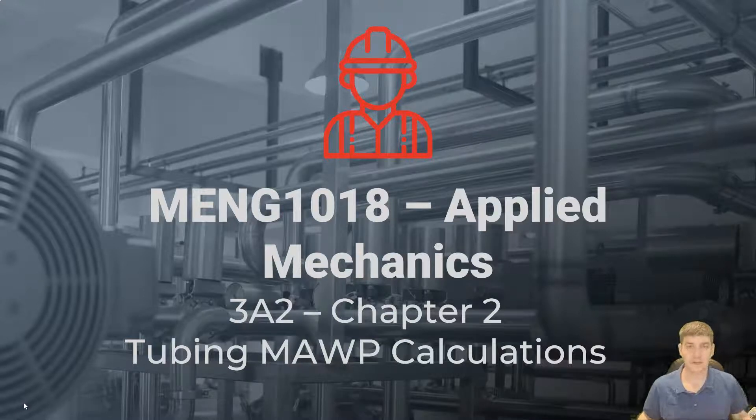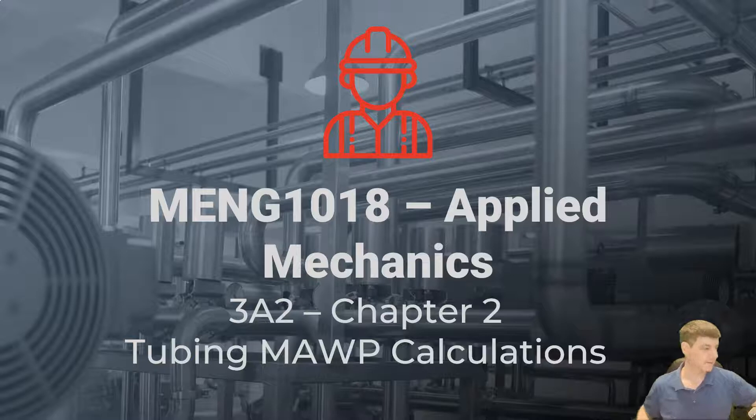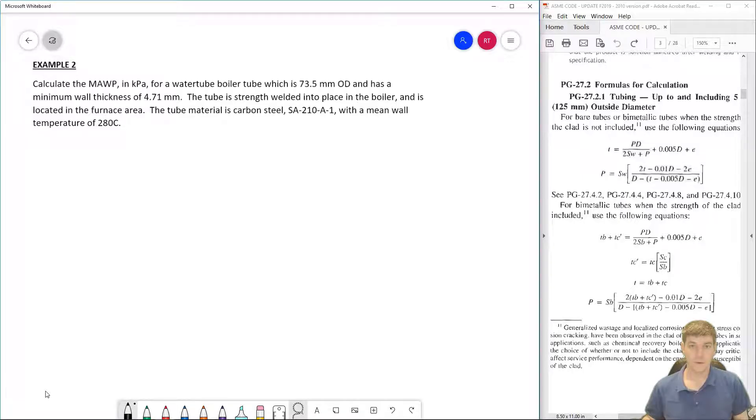Okay, so here's the second variation on tubing calculations if we need to find the maximum pressure that the tube can hold. We'll run through an example here and learn how to do that. Same process as we did before - we'll look at the question, reference the code, and come up with our solution.